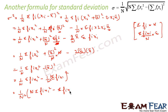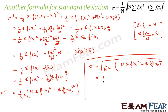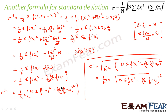This expression is the variance. To find the standard deviation, we take the square root: root of 1 by n squared into (n·sigma fi·xi squared minus sigma fi·xi whole square), which simplifies to 1 by n into root of (n·sigma fi·xi squared minus sigma fi·xi whole square). This is the derived standard deviation formula.